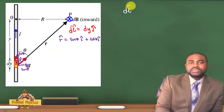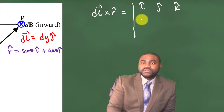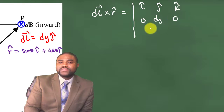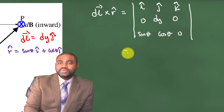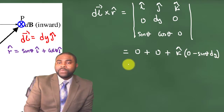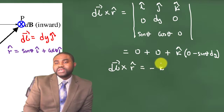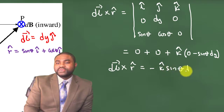This means that dl cross r̂ will be equal to — we can express this as a 3×3 determinant. The determinant has entries 0, dy, 0 and sinθ, cosθ, 0, which gives us 0 plus 0 plus k̂ bracket (0 minus sinθ dy). So dl cross r̂ is equal to negative k̂ sinθ dy.